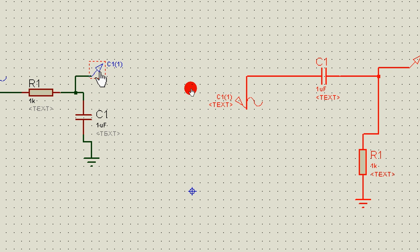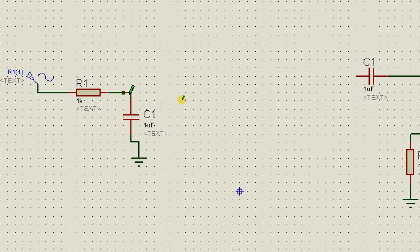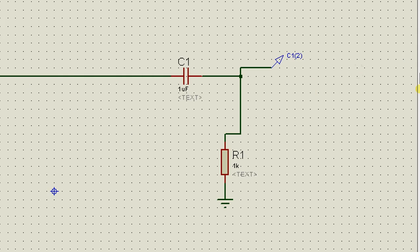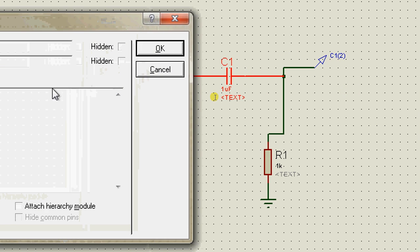Now this is the low pass filter circuit and this is the high pass filter circuit and I'm going to connect them in series. Now let me just change the values of the capacitance.